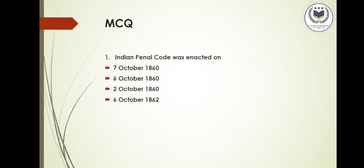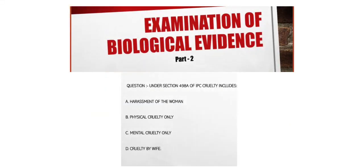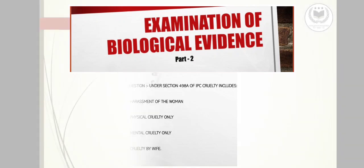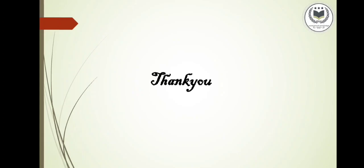Now, at the last, we have a multiple choice question. First: Indian Penal Code was enacted on — A. 7th October 1860, B. 6th October 1860, C. 2nd October 1860, D. 6th October 1862. Do share your answers in the comment section below. In the previous video on Examination of Biological Evidences Part 2, the MCQ answer was: Under Section 498A of IPC, cruelty includes — A. Harassment of the woman — which is the correct answer. Thank you for watching. Do like, share and subscribe.